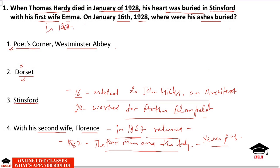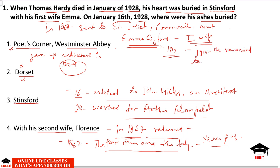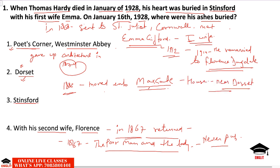In 1868, Hardy was sent to Saint Juliet, Cornwall, where he met Emma Gifford, who became his first wife. He gave up architecture in 1874 and became a full-time novelist. The marriage did not succeed — Emma died in 1912, and in 1914 he remarried Florence Dougill. In 1885 he moved to Maxgate, the name of his house, also near Dorset, now owned by the National Trust.